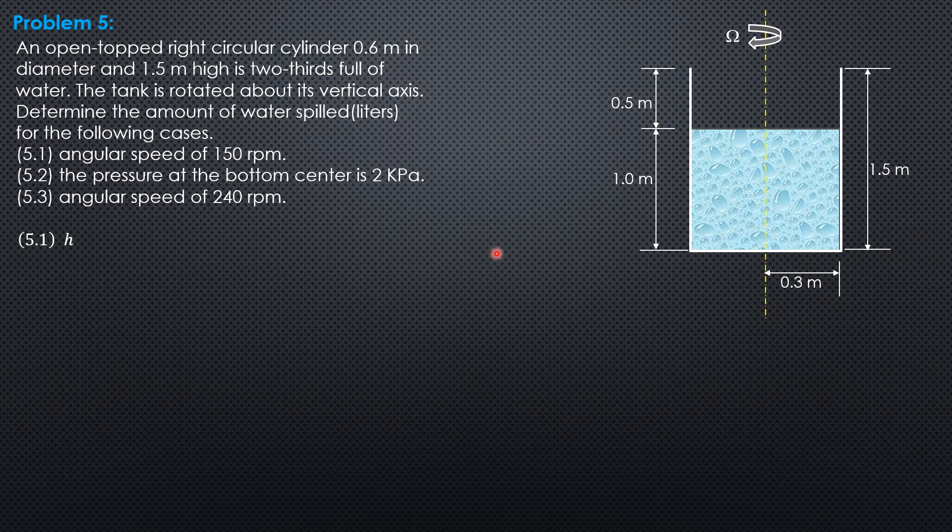The formula for H is 0.0005589 times omega squared times radius squared. Omega in number one is 150 rpm and radius is 0.3, so H sub 1 is 1.132 meters. This is greater than 1, therefore a certain volume of liquid will be spilled.